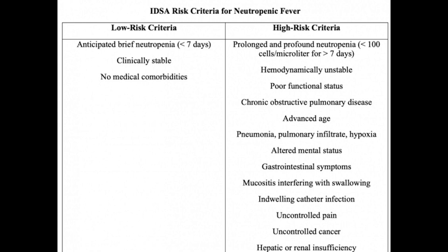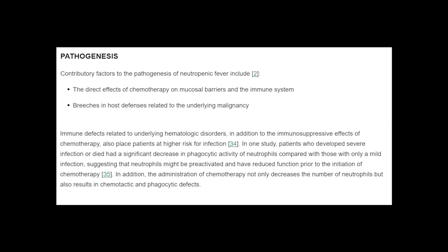In terms of pathogenesis, patients can have neutropenia from chemotherapy-induced causes. A lot of it is the immunosuppressive effects of chemotherapy, putting patients at higher risk for infection. When patients have neutropenia and are getting chemotherapy, their counts are low, so the first sign of infection will actually be fevers. That's why neutropenic fever is more of a red alarm to suggest that patients are in sepsis.